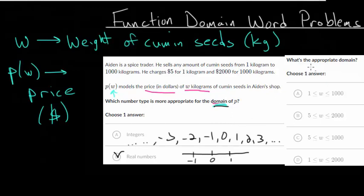So with this in mind, now we answer the second question: what is the appropriate domain? So for our cumin seeds, domain is always just going to be the smallest value of w, and it's going to go to the highest value. So the weight of cumin seeds goes from 1 kilogram to 1000 kilograms.